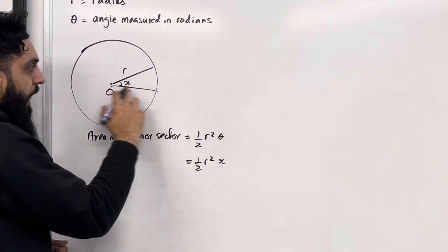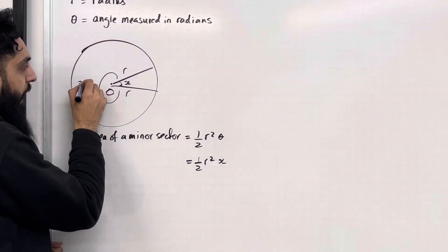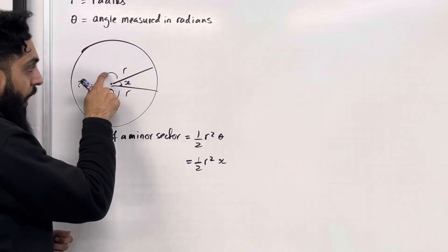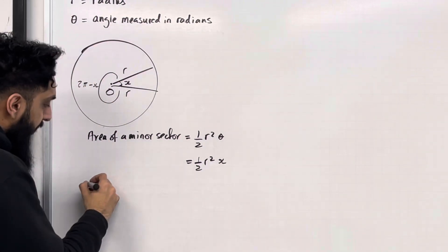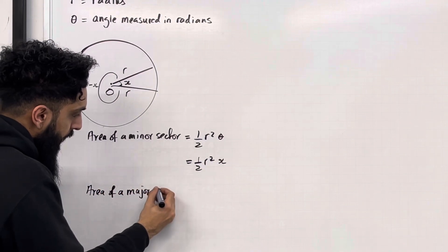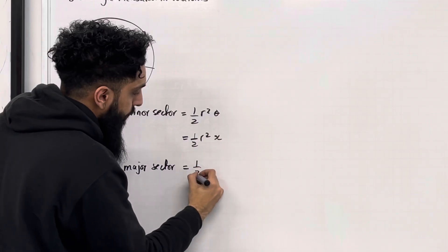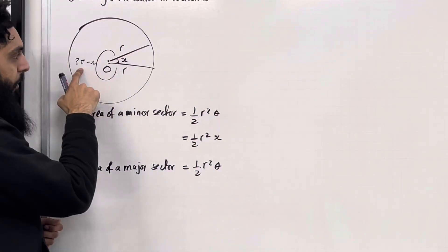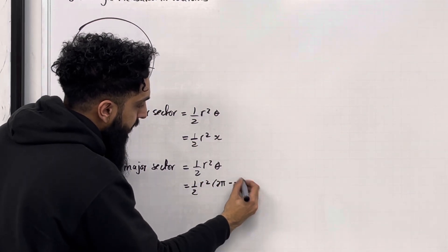We also have a major sector. For that major sector, this angle in radians is 2π minus X. We know that for a full turn the angle is 2π, so we just take away the angle X. The area of the major sector is given by the general formula one half R-squared theta, but for the major sector theta is 2π minus X, so we get one half R-squared multiplied by (2π minus X).